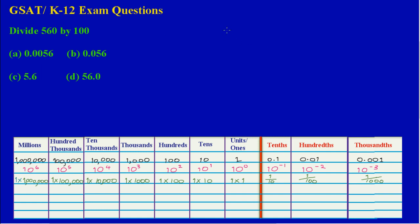Here we have 560 and we're asked to divide 560 by 100. Now 560 is a whole number, and for a whole number the decimal point is at the end of the number.